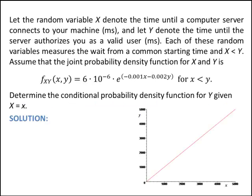Here's the particular example that we're going to look at. Let the random variable X denote the time until the computer server connects to your machine. And let the random variable Y denote the time until the server authorizes you as a valid user. Now each of these random variables measure the wait time from a common starting point. And we also are given the information that the random variable Y is greater than X.